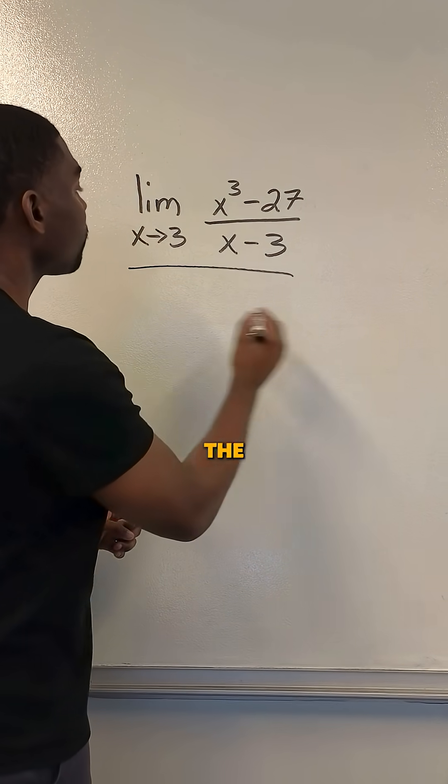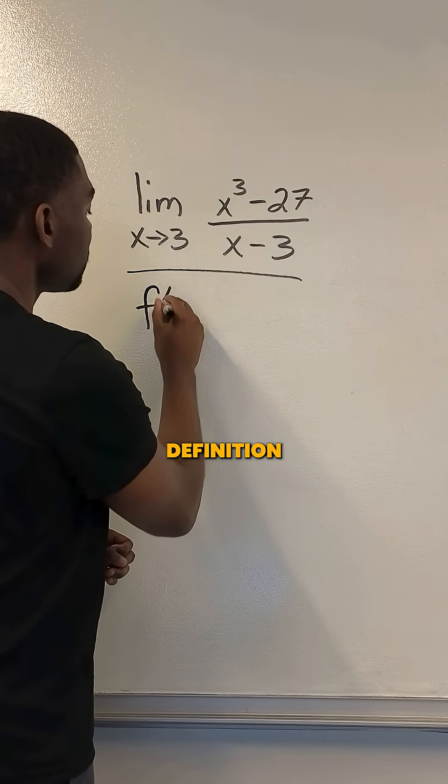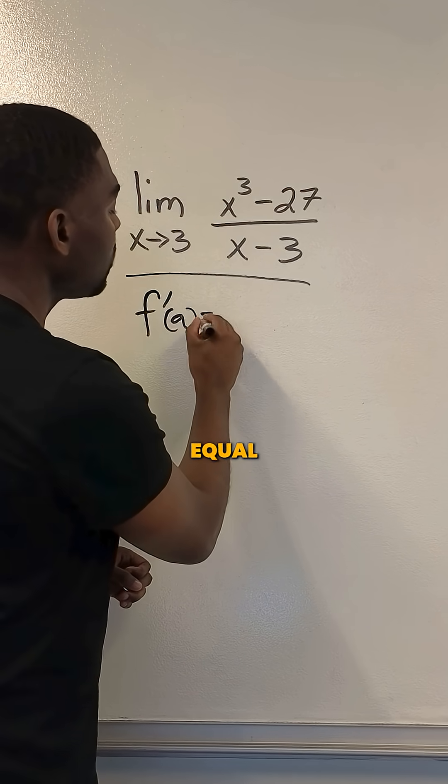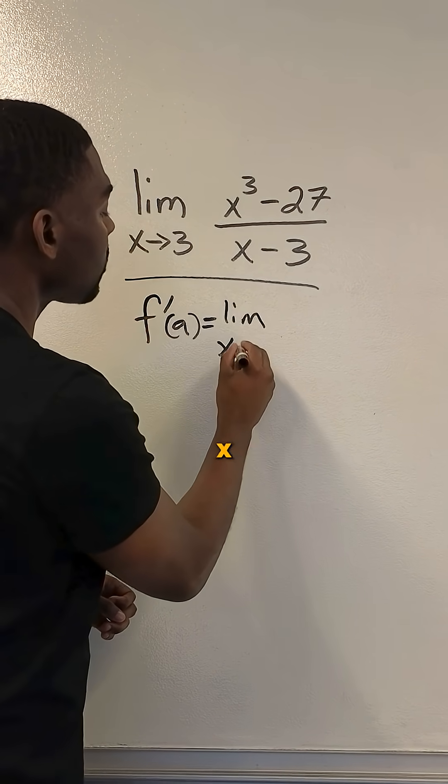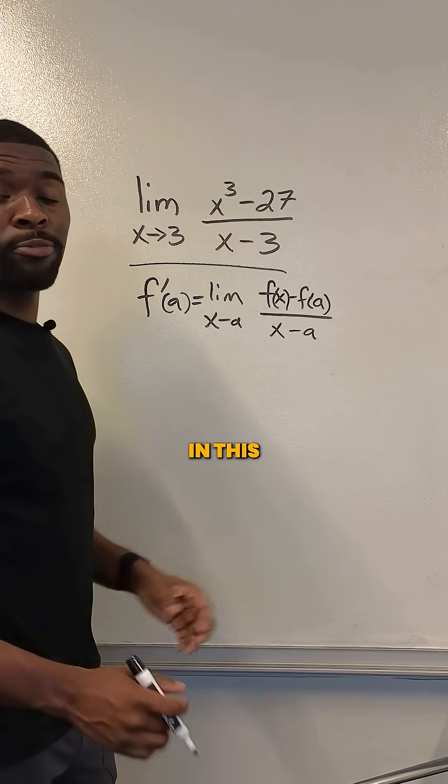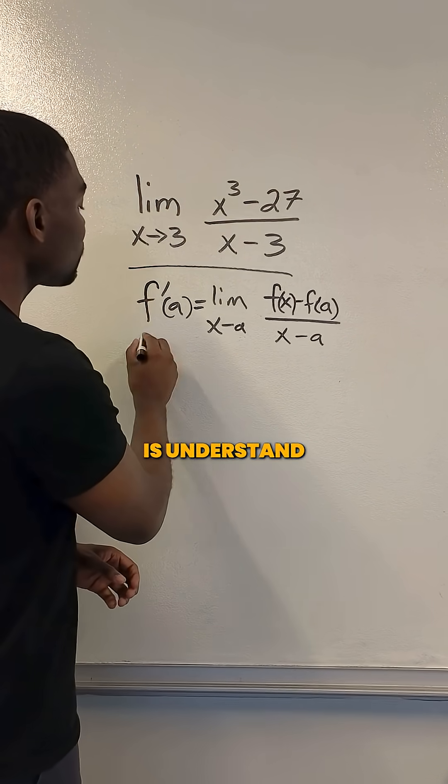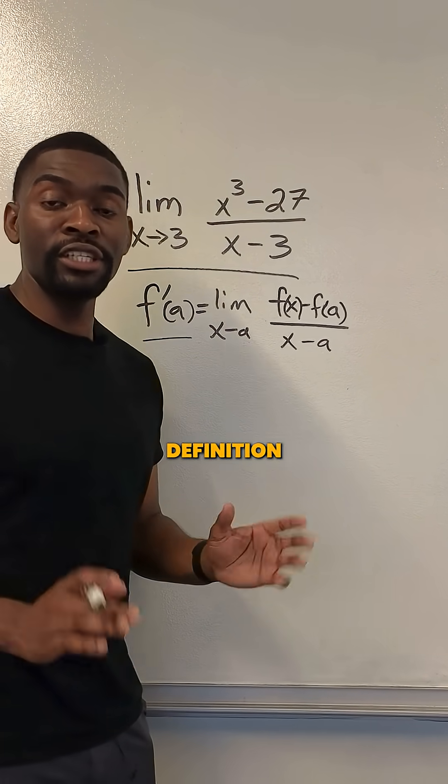In this problem, I know that this is the format of the limit definition: f prime of a is equal to the limit as x approaches a. So the first thing I would do is understand that this is the limit definition of a derivative.